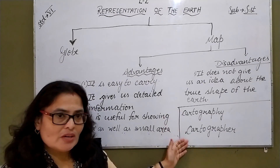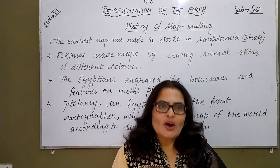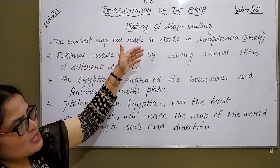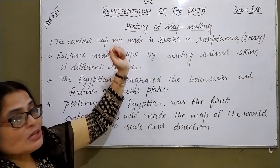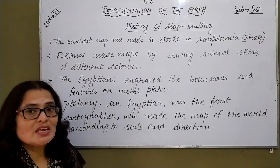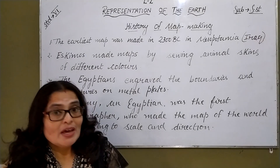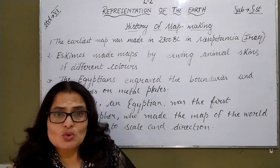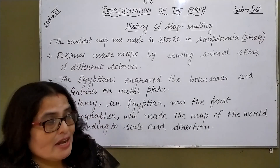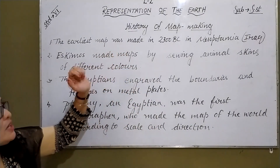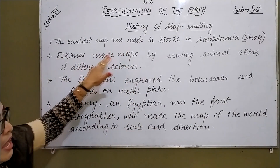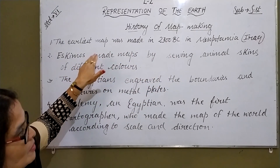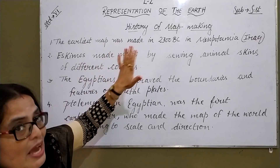Now you are familiar with these two terms. Let's talk about the history of map making. The earliest map was made in 2300 BC in Mesopotamia — the present name of Mesopotamia is Iraq. It was made on a clay tablet, but the maps of that period were not very clear; they only showed the boundary of the land. This map was not successful. Eskimos made maps by sewing animal skins of different colors.